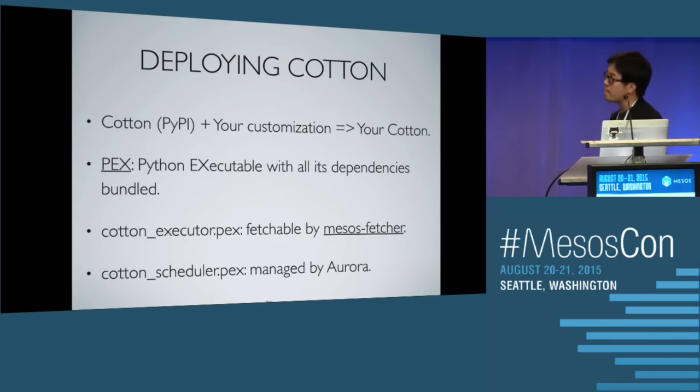After doing all this customization, how do you put it into your cluster? The Apache Cotton project exports its release onto PyPI, which you add as a dependency for your customization. That becomes your version of Cotton. Because it's a Python application, we use PEX — a Python executable mechanism — to bundle all dependencies into one binary, resulting in a cotton-executor.pex and a cotton-scheduler.pex, which are dropped into the cluster by standard means.